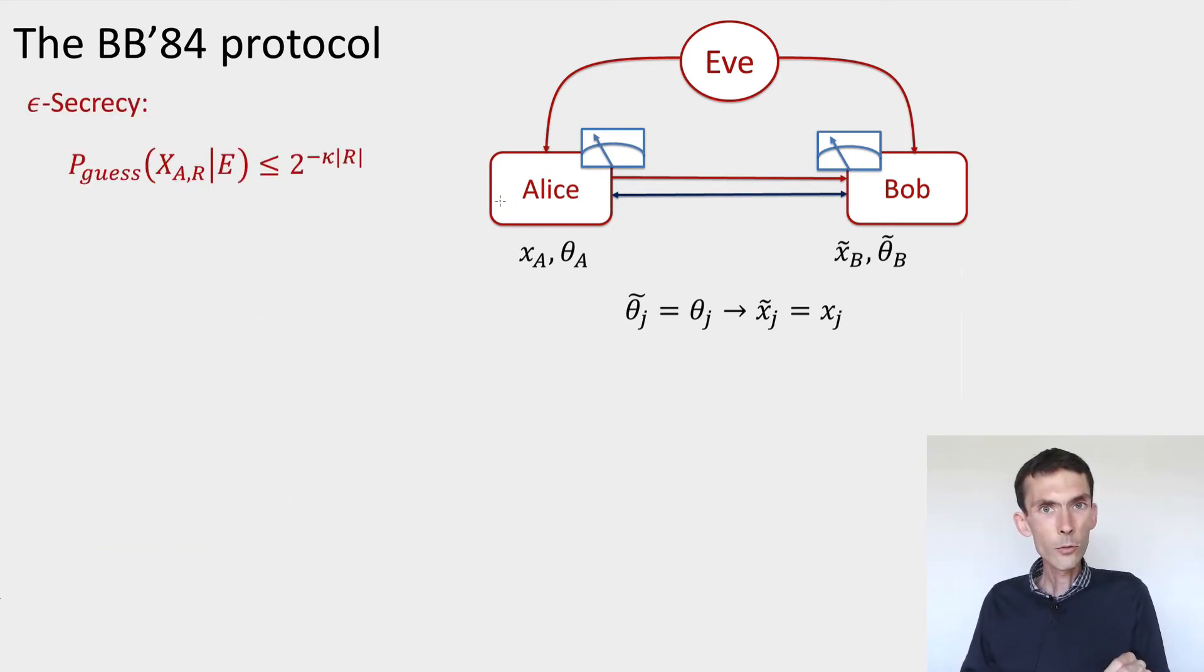Let me do it for you making some simplifying assumptions. Let me assume, even though this is not possible, that the bits used for the raw key are in fact the same as the bits used for testing. It's not possible because these bits are revealed in the public communication channels. Let's put that fact aside and imagine that X_AR equals X_AT. And let's also make the simplifying assumption that the test passes perfectly. There's no error at all. Alice and Bob observe that the string X_AT equals X_BT.